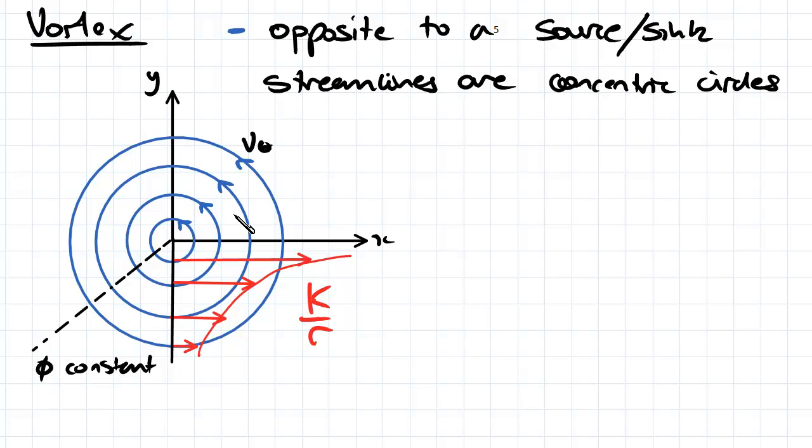The first thing that we have with a vortex flow that we want to define is the value for our rotational velocity here.